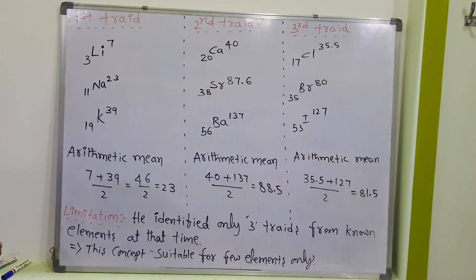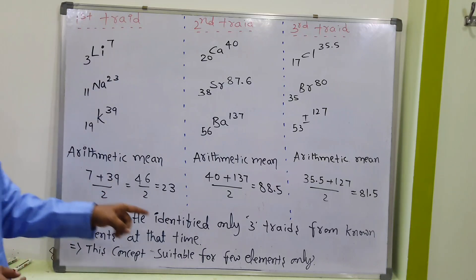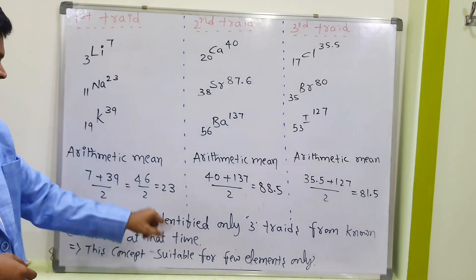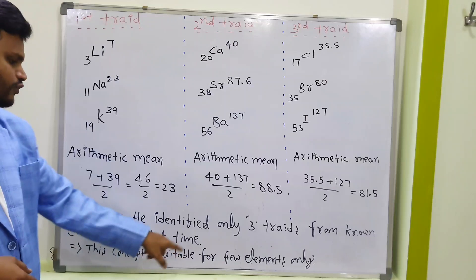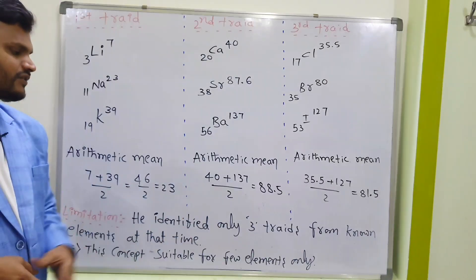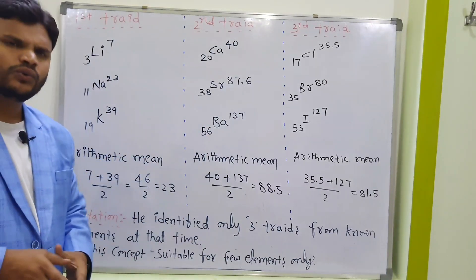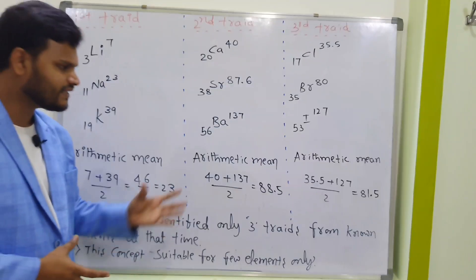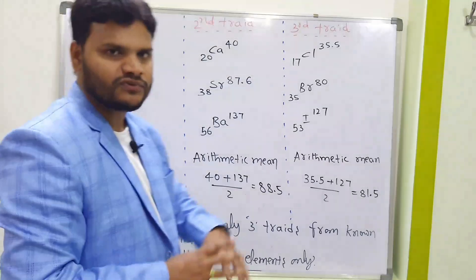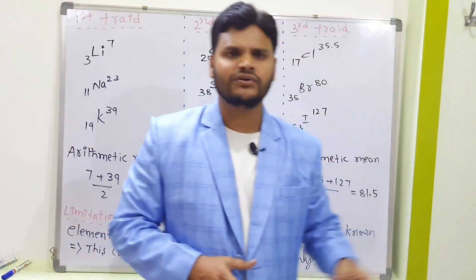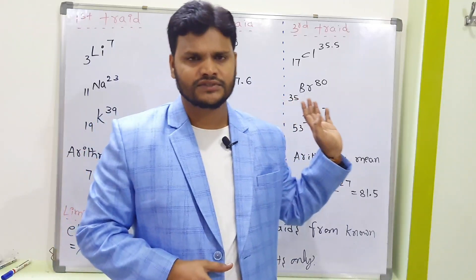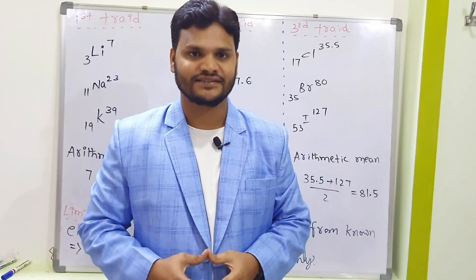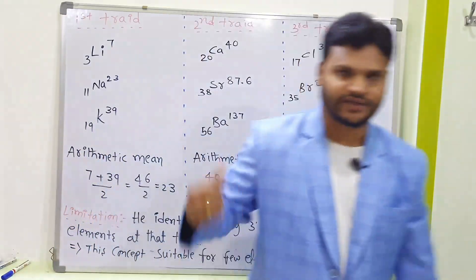So what is the limitation? Döbereiner identified only 3 triads from the known elements at that time, and this concept was suitable for only a few elements. At that time, only 53 elements were known. That is the reason this concept was considered limited — but it was the startup idea, not a complete failure.